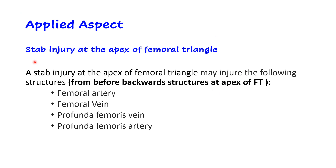Regarding the applied aspect: if there is a stab or bullet injury at the apex of the femoral triangle, one has to be very careful because the four major blood vessels of the thigh lie one behind the other in one plane. From before backwards at the apex, the arrangement is: femoral artery most superficially, then femoral vein, then profunda femoris vein, and then profunda femoris artery most posteriorly. Arteries are anterior and posterior, with veins in between. This arrangement can lead to severe hemorrhage.